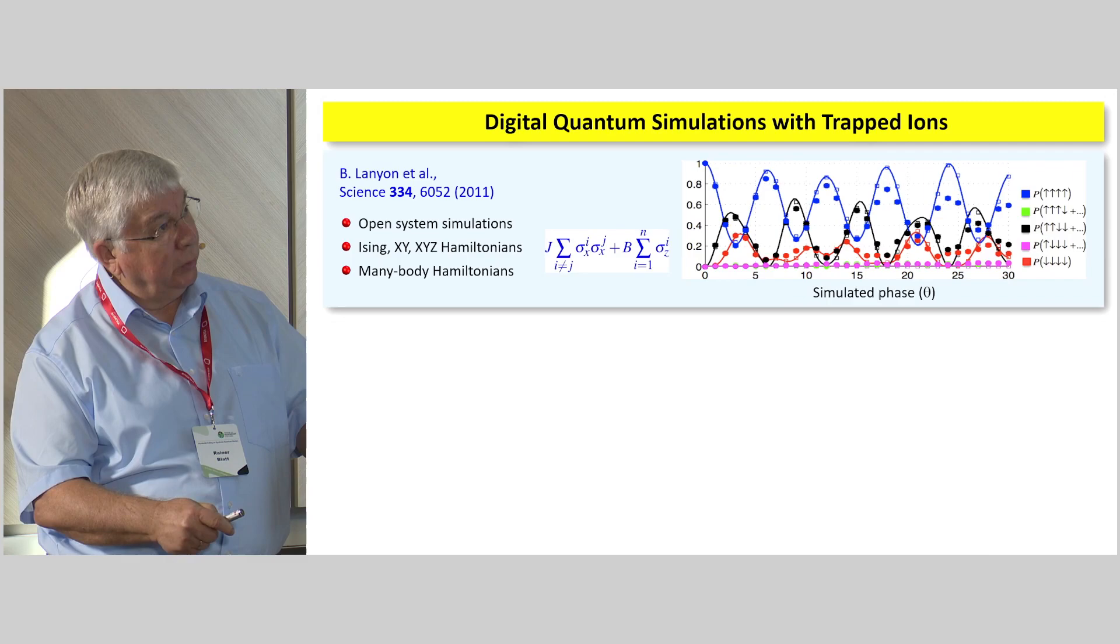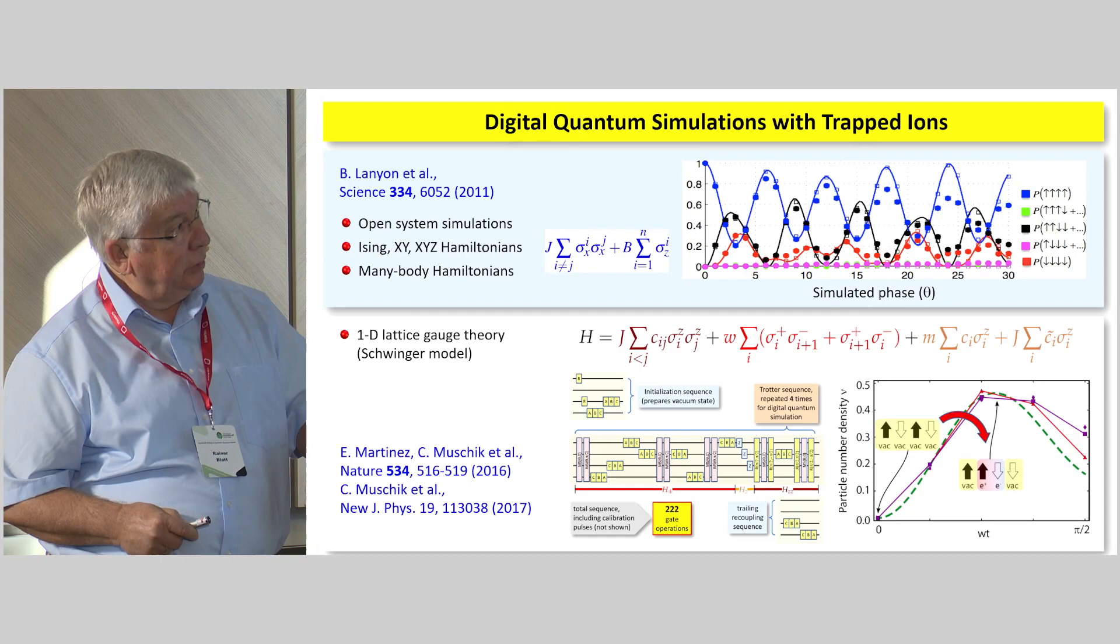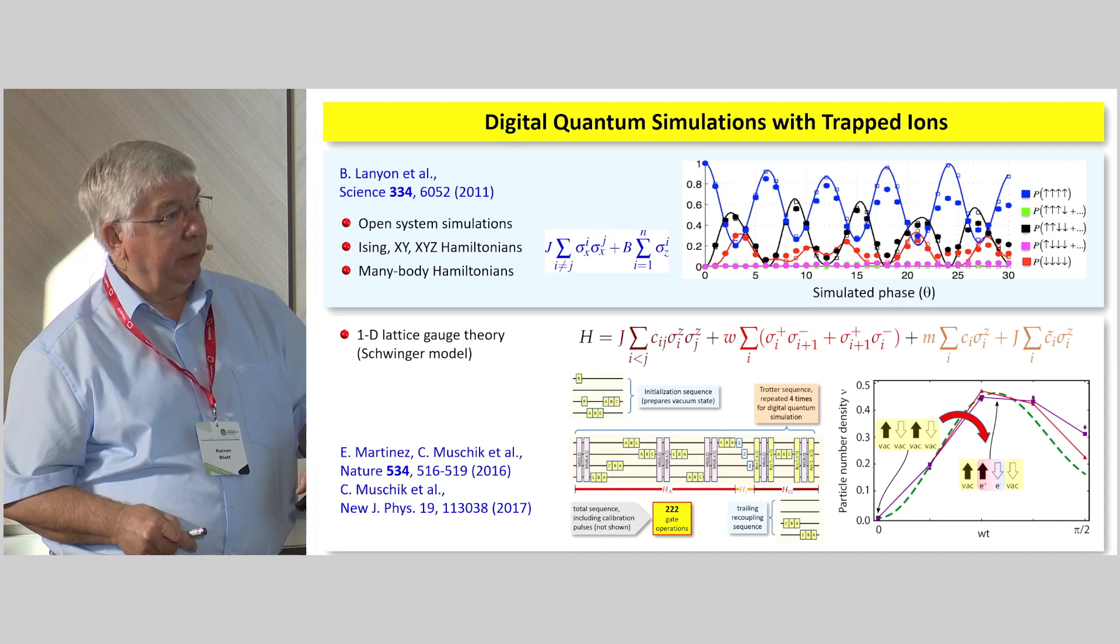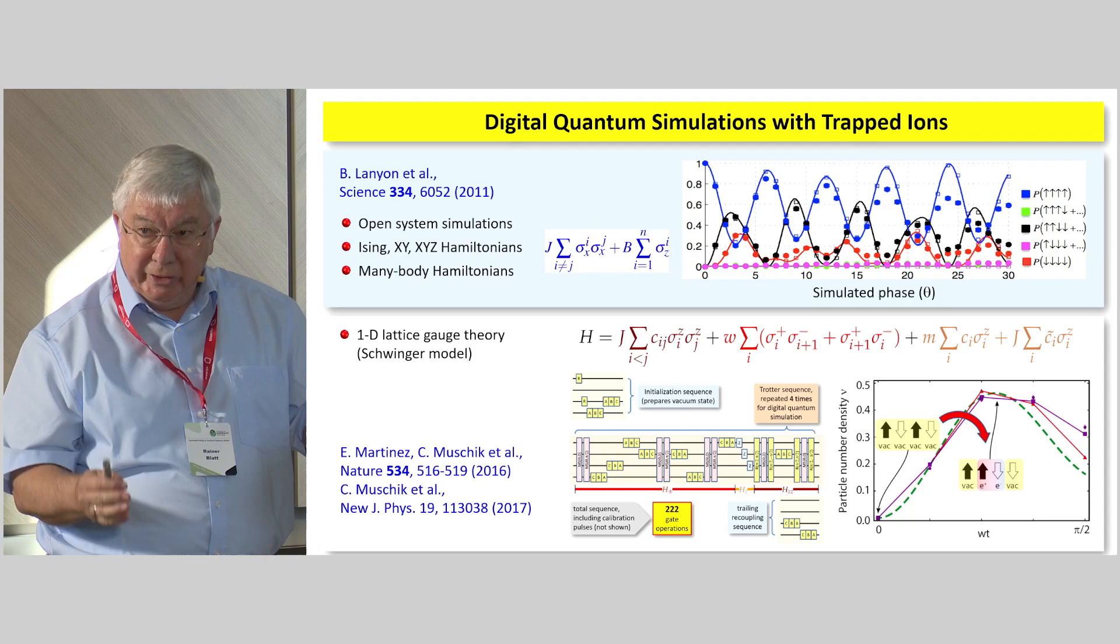And this is some more recent work, for example, that we just implemented the one-dimensional lattice gauge theory. It's a Schwinger model in this case. Here, we can apply more than 200 gate operations to see the evolution right here, which then just mimics the pair creation, the particle-antiparticle pair creation described by the Schwinger model. And lots of these things can be done. Currently, we are working on two-dimensional Schwinger models the same way.